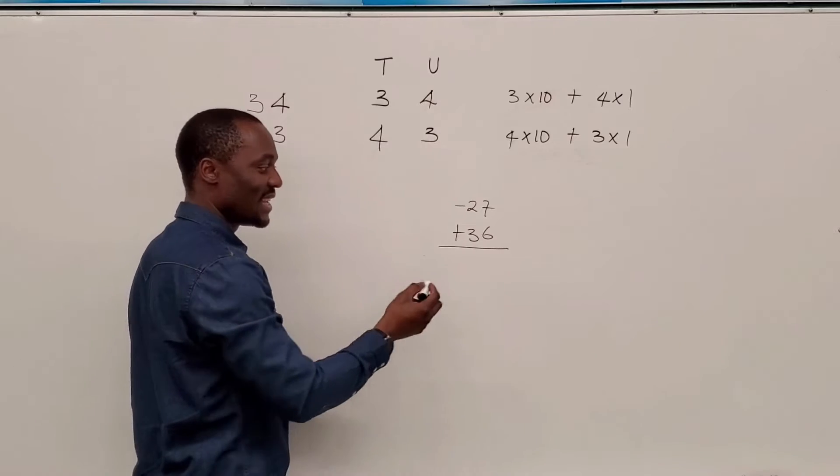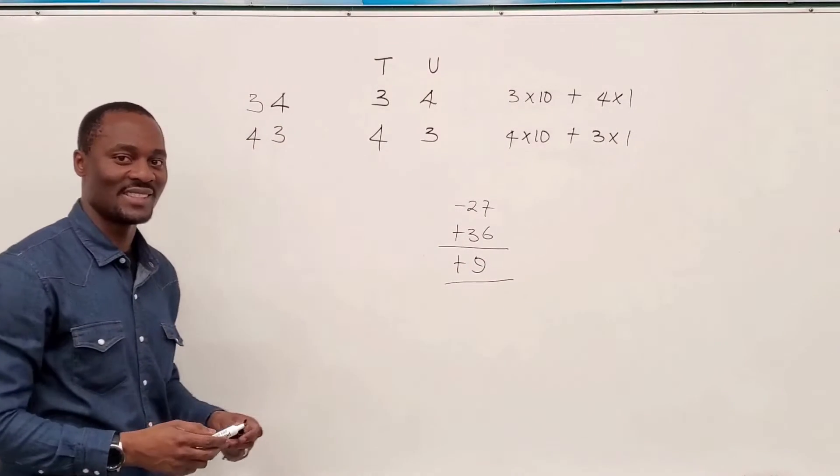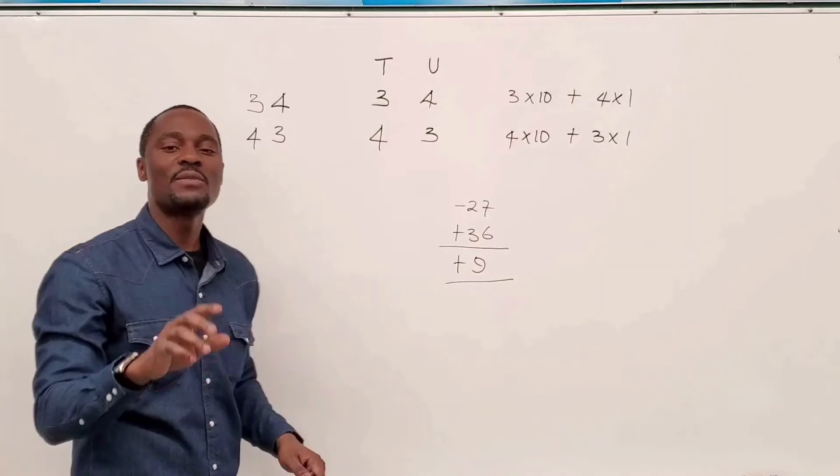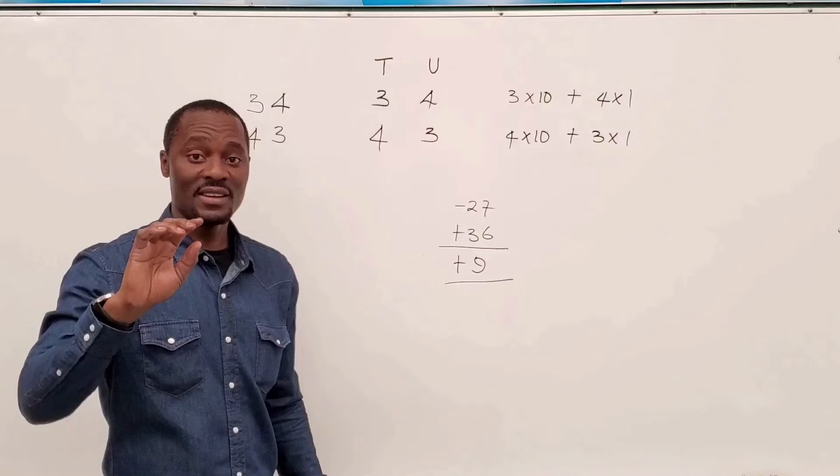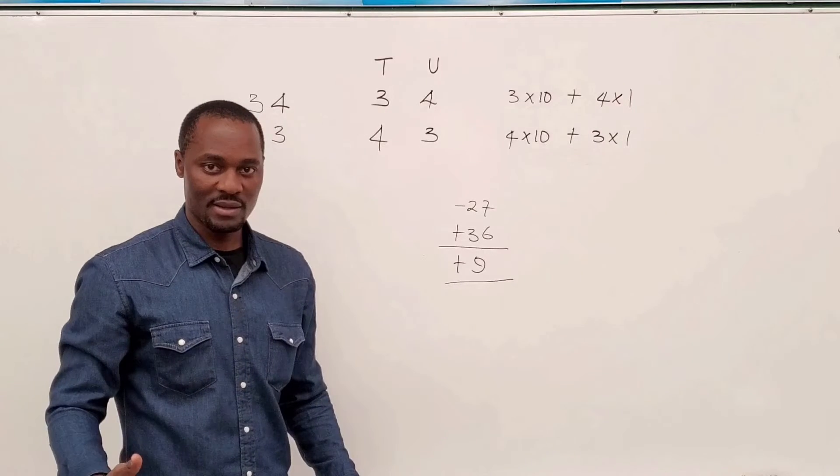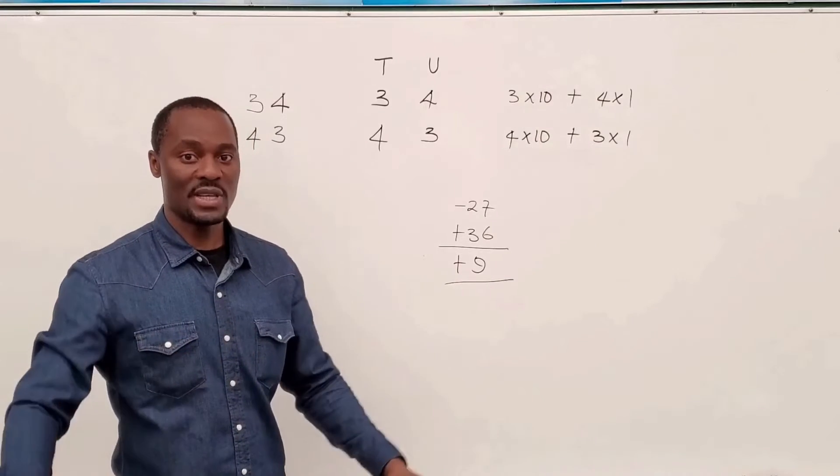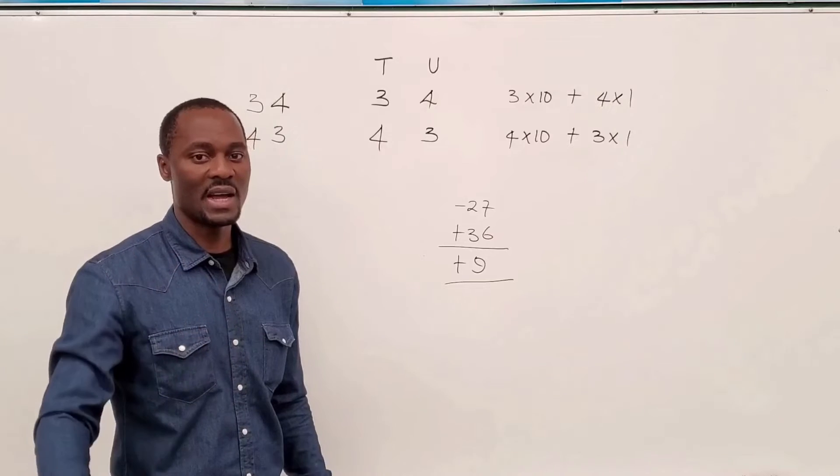What is the overall change in the value of this number? Obviously, there's been an increase of nine. You see, the nine factor is still there. So whenever you interchange the digits of a two-digit number, there is always a difference or an increase of nine or a multiple of nine.